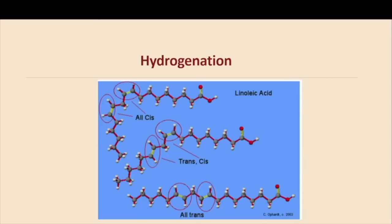The great invention that enabled the use of oils was learning how to hydrogenate them. This was a process invented by a German in the early 1900s. It takes that squiggly molecule and through a chemical process makes it straight and flat, so you can take an oil and make it a straight molecule that allows it to be hardened into a solid substance where all those molecules stack up against each other.